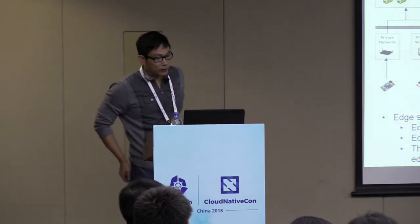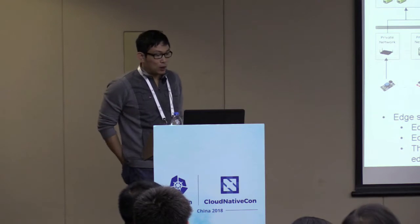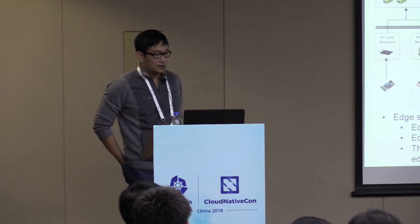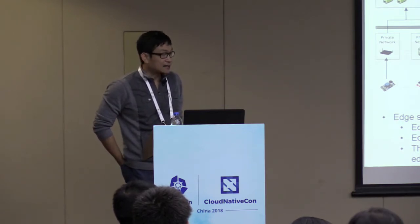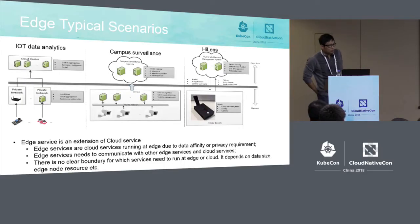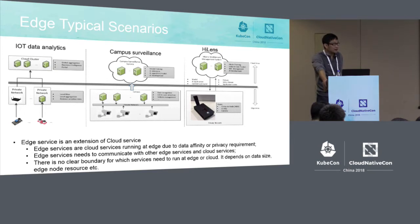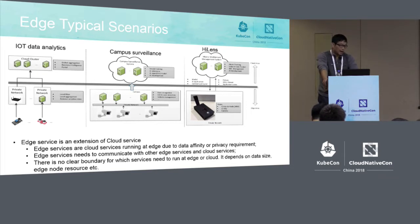For these three scenarios, there is a common theme: edge service is actually an extension of cloud service. If we had enough bandwidth between the edge and the cloud, all services running at the edge could run in the cloud and we wouldn't need edge nodes. But the reason we need edge nodes is that data is generated on the edge side, and we want to perform data affinity scheduling there.